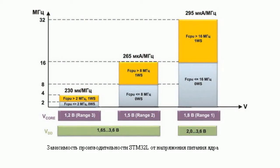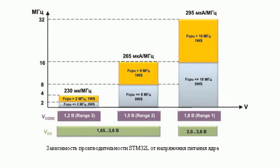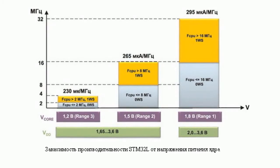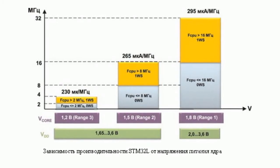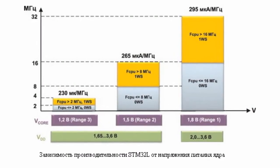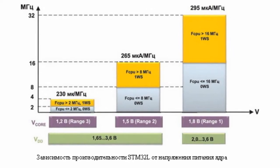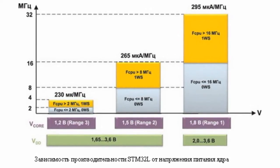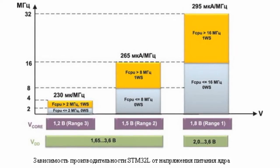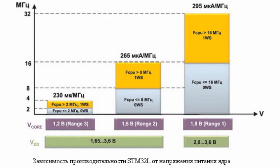For this purpose, the STM32L line implements a dynamic change in microcontroller core voltage. It allows dynamic changing of core supply voltage in three ranges: 1.8 V (range 1), 1.5 V (range 2), and 1.2 V (range 3). This reduces overall energy consumption by more than 25%. In range 1 you can reach maximum productivity without any restrictions. In range 2, maximum clock frequency is restricted to 16 MHz. In range 3, maximum controller frequency is restricted to 4 MHz.